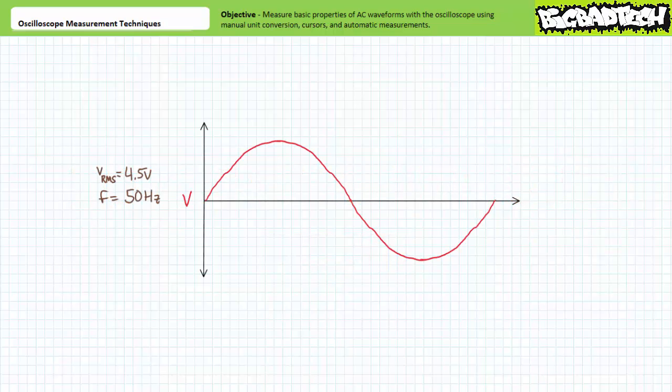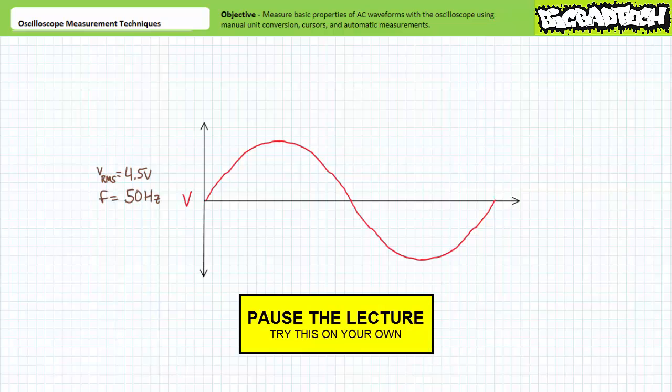In this spirit, consider a time-variant voltage waveform with the following characteristics. It is sinusoidal in nature, has an effective or RMS value of 4.5 volts, and a frequency of 50 hertz. It should be well within your capacity to calculate peak value, peak-to-peak value, and period. By all means, pause the lecture and do so now.